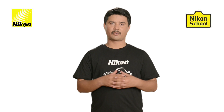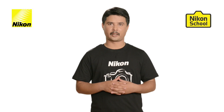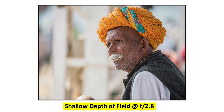Let us have a look at some of the images shot in aperture priority auto mode. Here is an image that gives you very shallow depth of field at aperture F2.8. At this wide aperture, the depth of field is very shallow. You do not have to worry about shutter speed when you are in A mode.